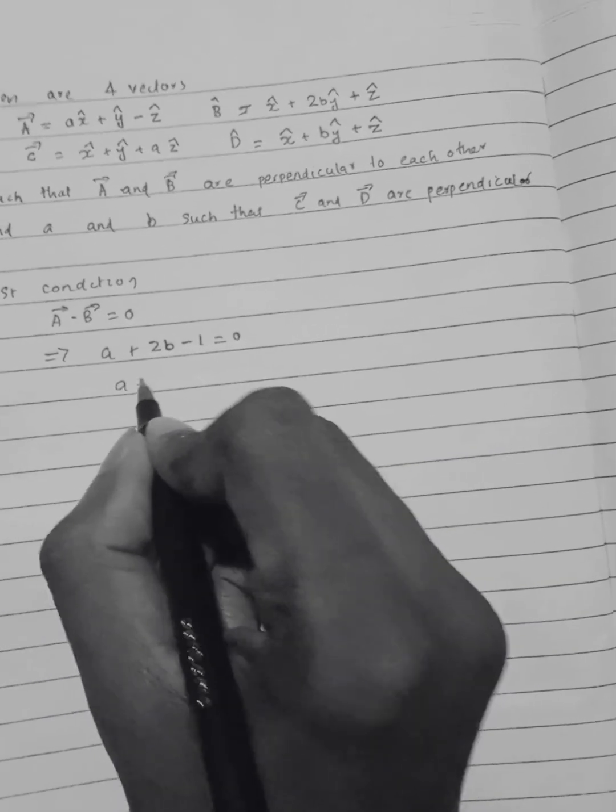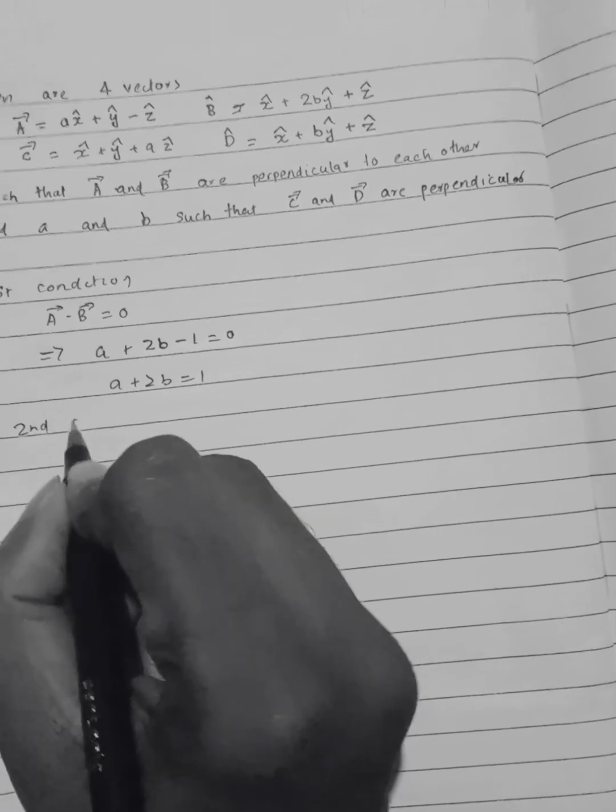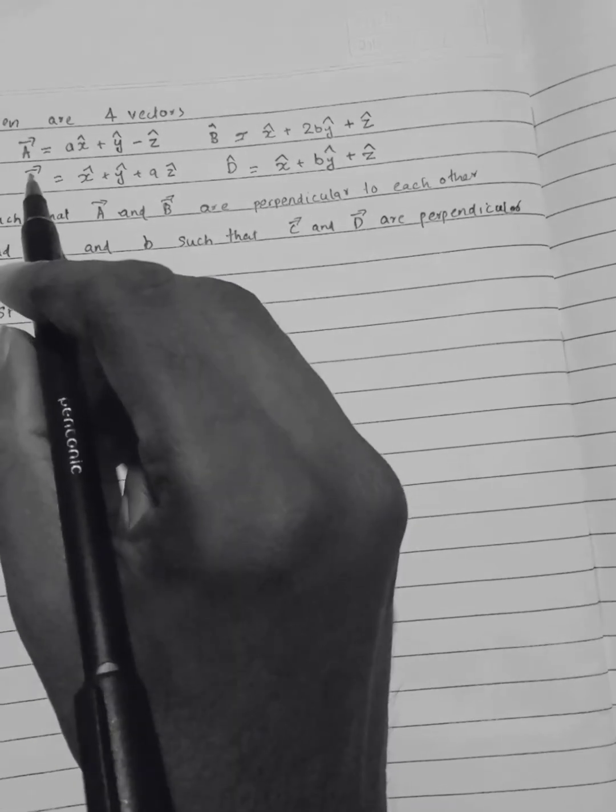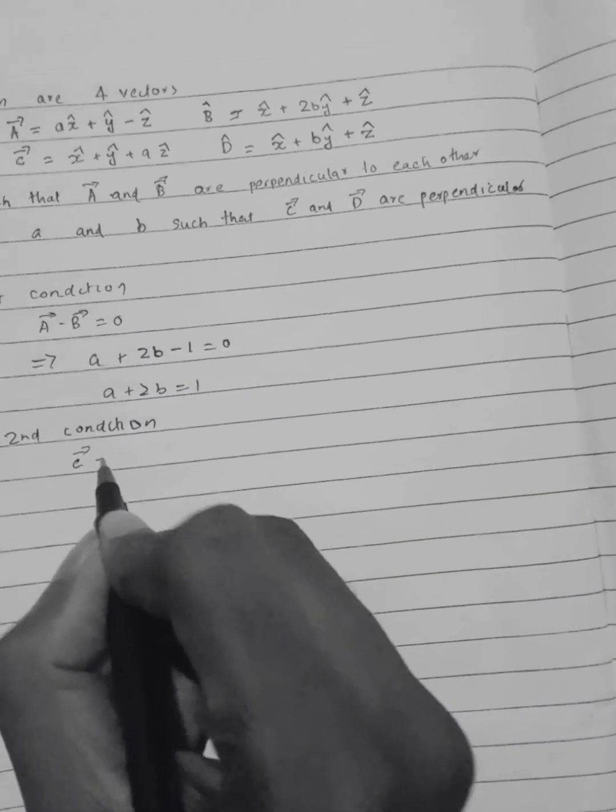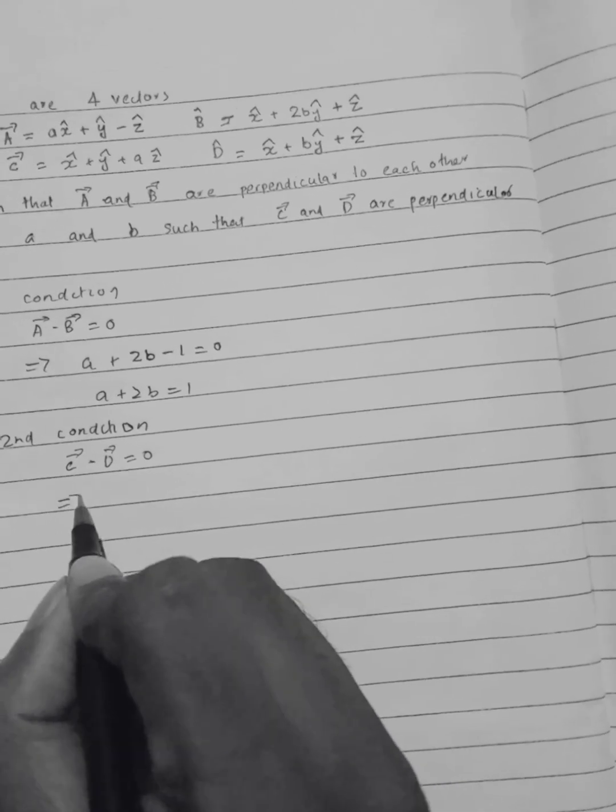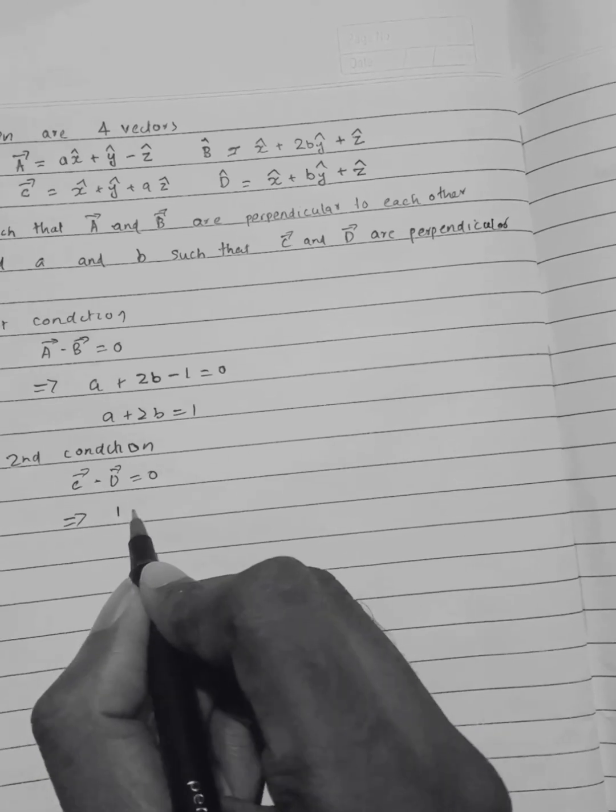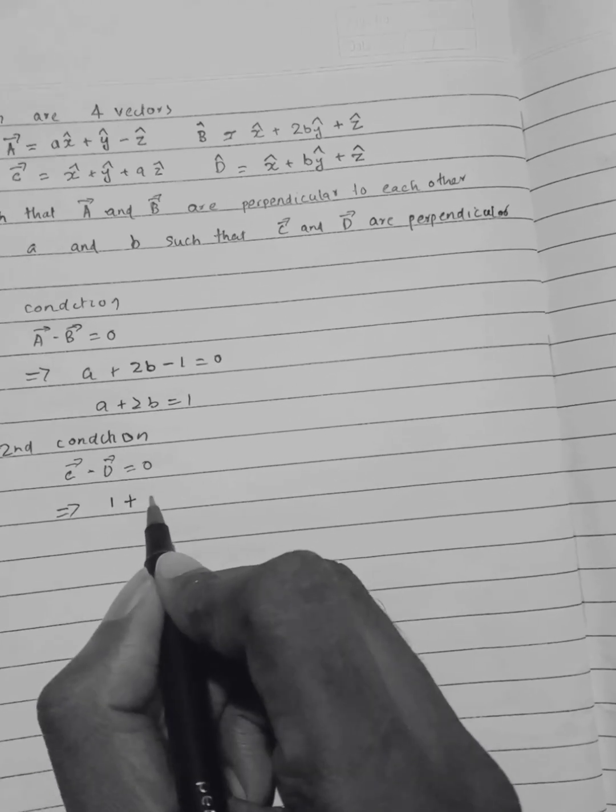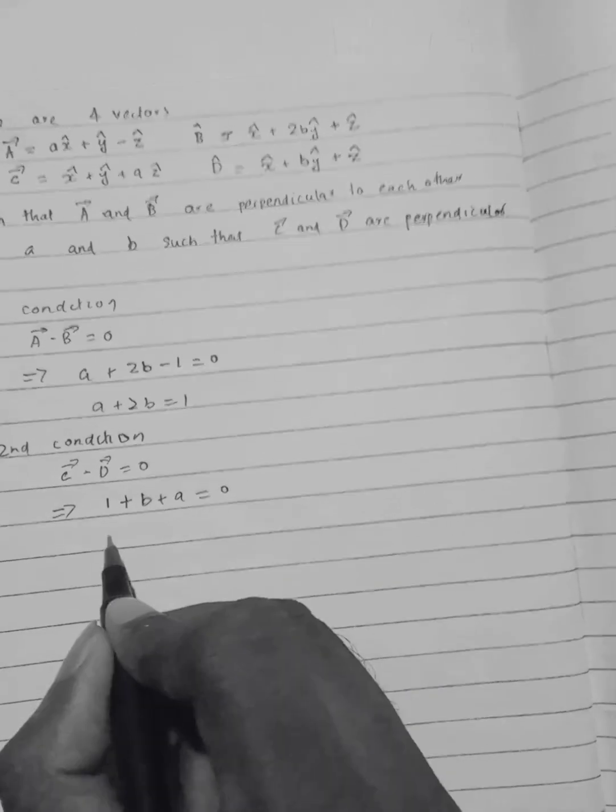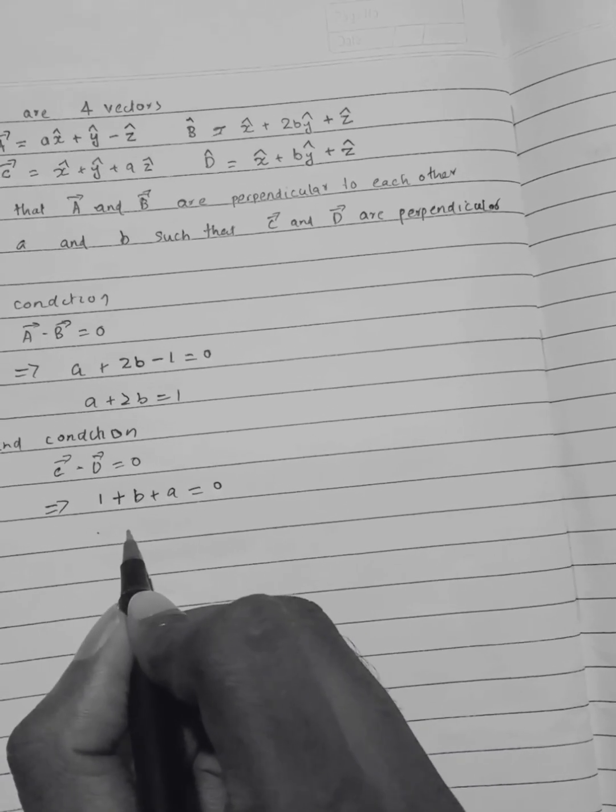This can be written as a plus 2b equals 1. The second condition would be C dot D equals zero, which implies 1 plus b plus a equals zero, which can be written as b plus a equals zero.